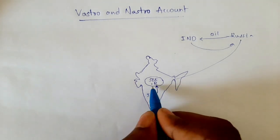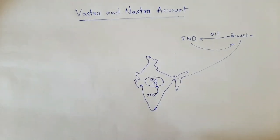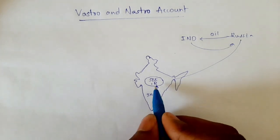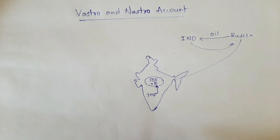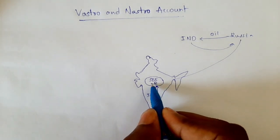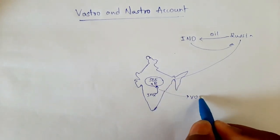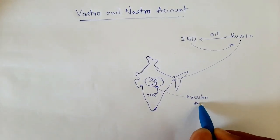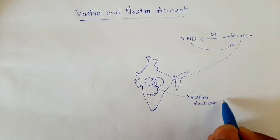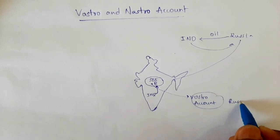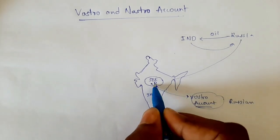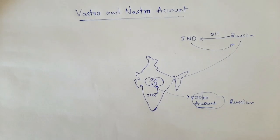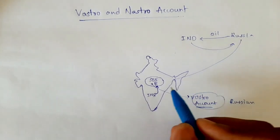Now there is a Russian account sitting in an Indian bank. Indian people — India — call this account a Vostro account, because it is a foreign account. This is the Russian account held in India, so India calls this account a Vostro account. But Russia calls it something different.